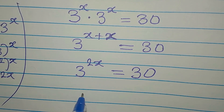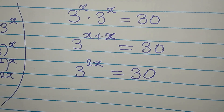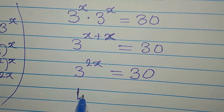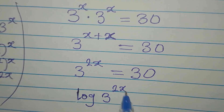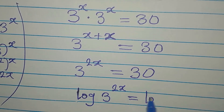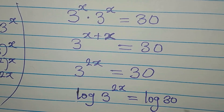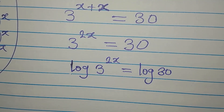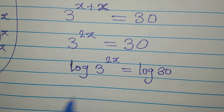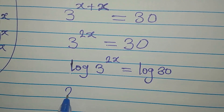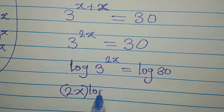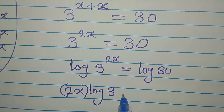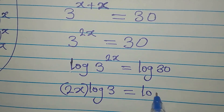From here, we will take the log of both sides. So we are going to have log of 3 to the power of 2x equals log of 30. The next thing is to bring the power down: we get 2x times log 3 equals log 30.